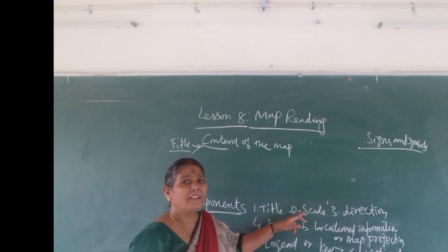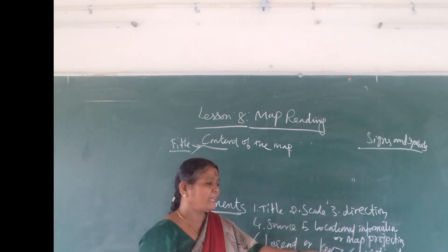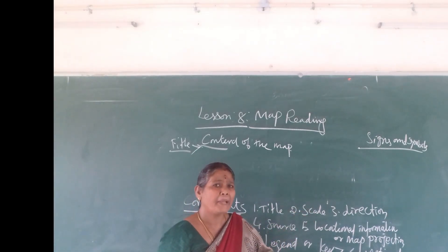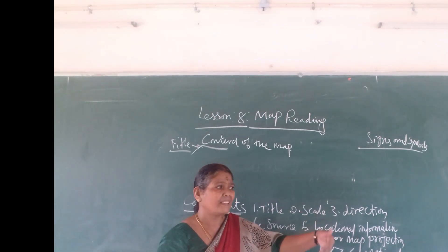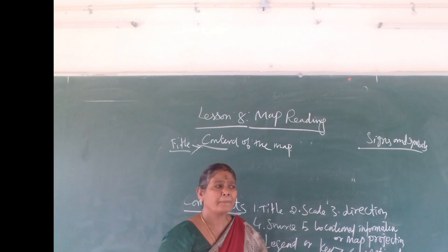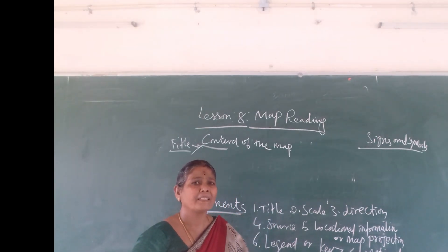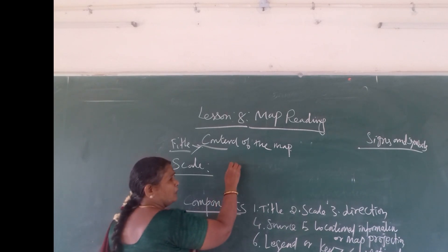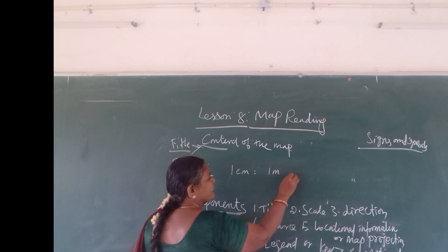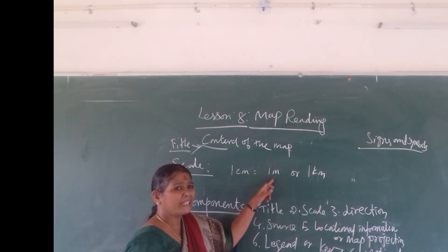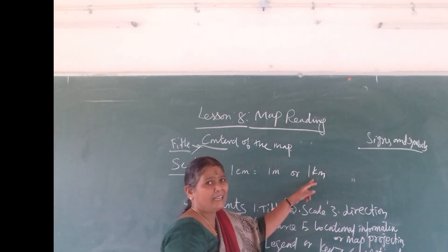The second component is scale. Scale is the ratio between the actual distance on the ground and the distance represented on the map. The cartographers, while making a map, are not able to represent the actual distance found on the earth. For example, one centimeter on the map represents either one meter, one thousand meters, or one kilometer. One centimeter on the map corresponds to one meter or one kilometer on the actual ground.